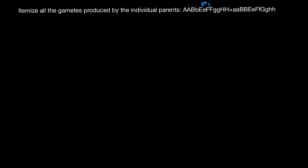Hello and welcome to Nikolai's genetics lessons. Today I got a question from one of my subscribers: itemize all the gametes produced by the individual parents. Here is the genotype of parent one, and here's the genotype of parent two. So let's put P1 here and P2 here.